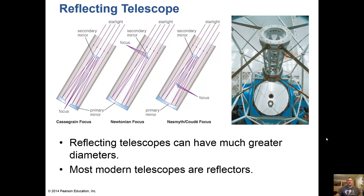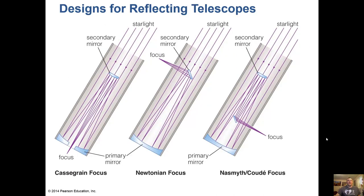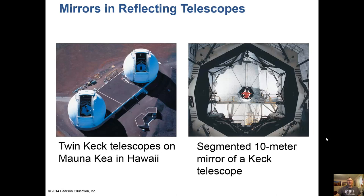Reflecting telescopes use mirrors, and most mirrors these days are actually segments combined together. There are different designs depending on where the focus is — the Cassegrain focus, which I'm most familiar with from my work in astronomy, the Newtonian focus, popular with amateurs, and the Coudé focus. Here are the twin Keck telescopes in Hawaii at Mauna Kea Observatory — 10 meters in diameter, made of 36 mirror segments combined to make a single 10-meter mirror. A 10-meter mirror all by itself would be very heavy and impractical, so we make smaller mirrors and combine them.